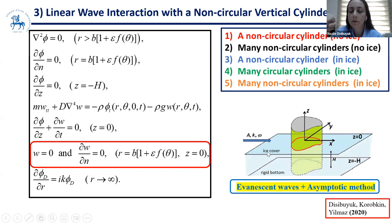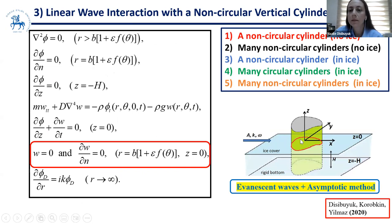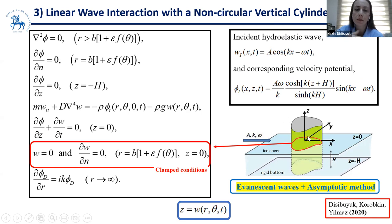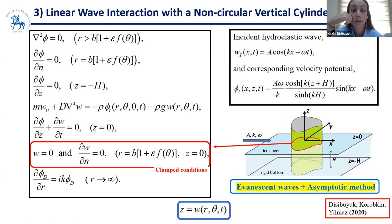Now, if the water surface is covered by an infinite continuous ice plate and we have a non-circular cylinder clamped (frozen) to the ice, we assume an incident hydroelastic wave where w is the ice deflection. Since the cylinder is frozen to the ice cover, we apply clamped edge conditions. We could assume other conditions, but this is the simplest, so we started solving the problem with clamped edge conditions.